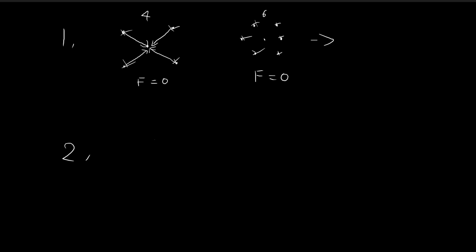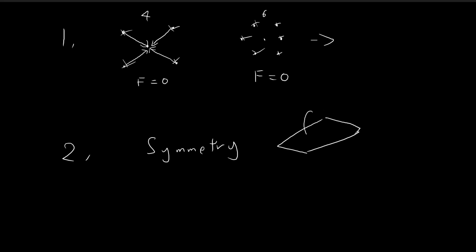The second reason relies on a symmetry argument. Because the setup is symmetrical at the center, there is no reason for the net force to lean either way, so it has to be equal to zero. This is similar to a case where you have a flat surface with a sphere sitting on it. Because the surface is flat and symmetrical on every side, there is no tendency for the sphere to lean either way — that's why it just sits still instead of spontaneously rolling to some random side.